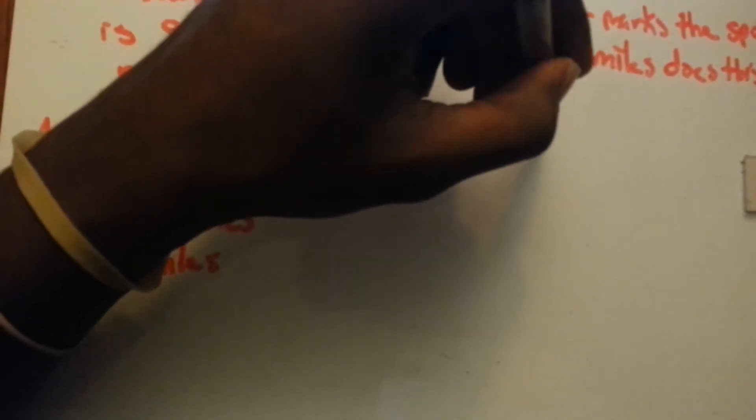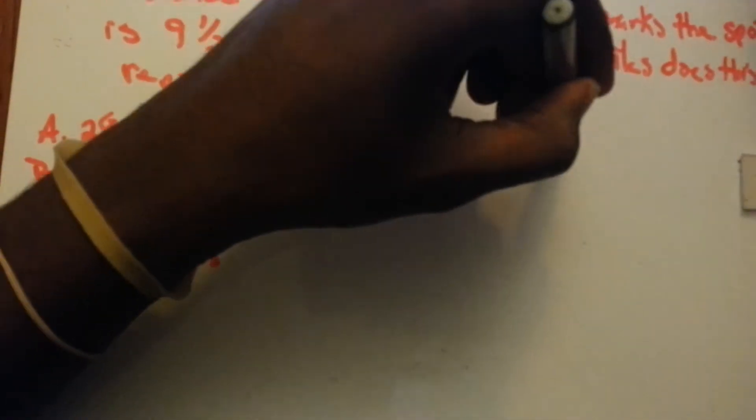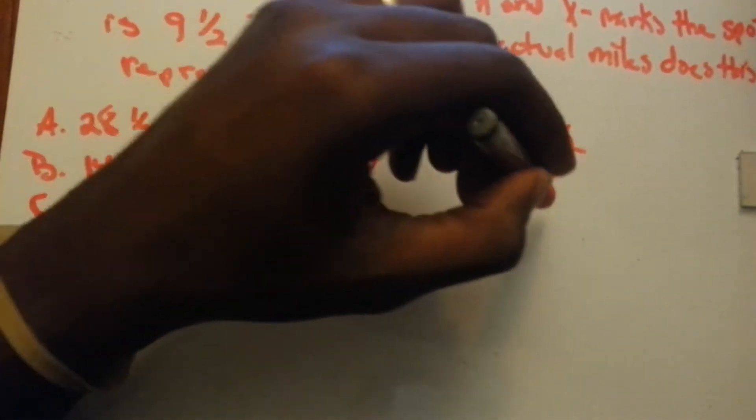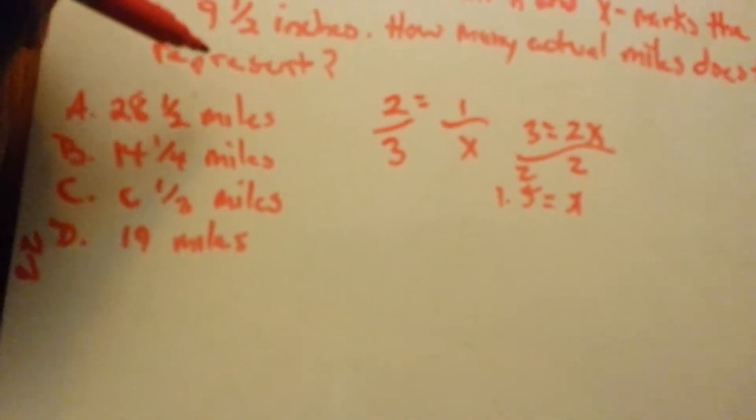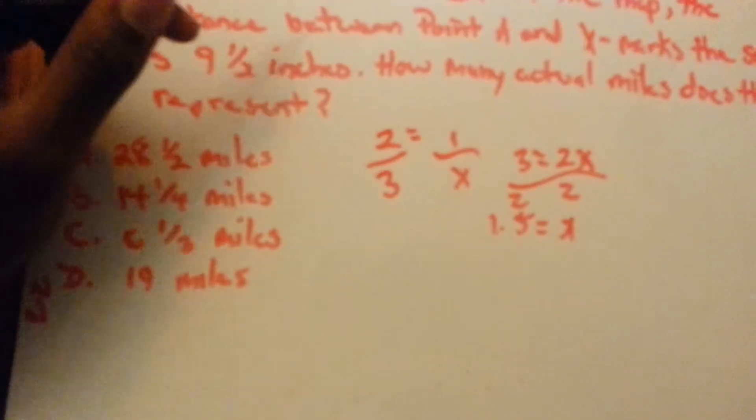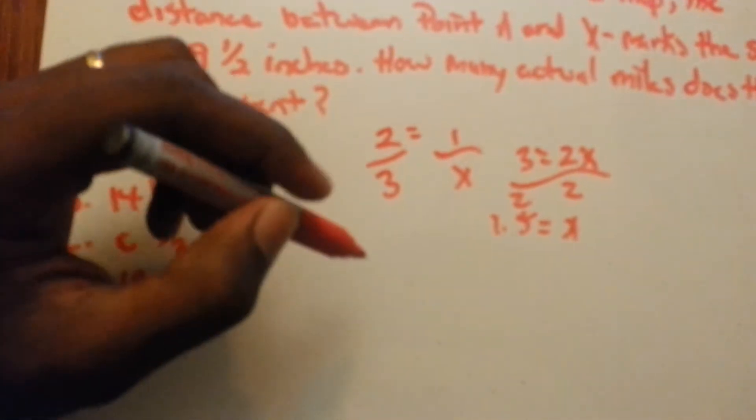3 equals 2x, divided by 2, divided by 2, x equals 1.5. Or you can just say 2 is 3, so 1 equals 1.5, obviously.